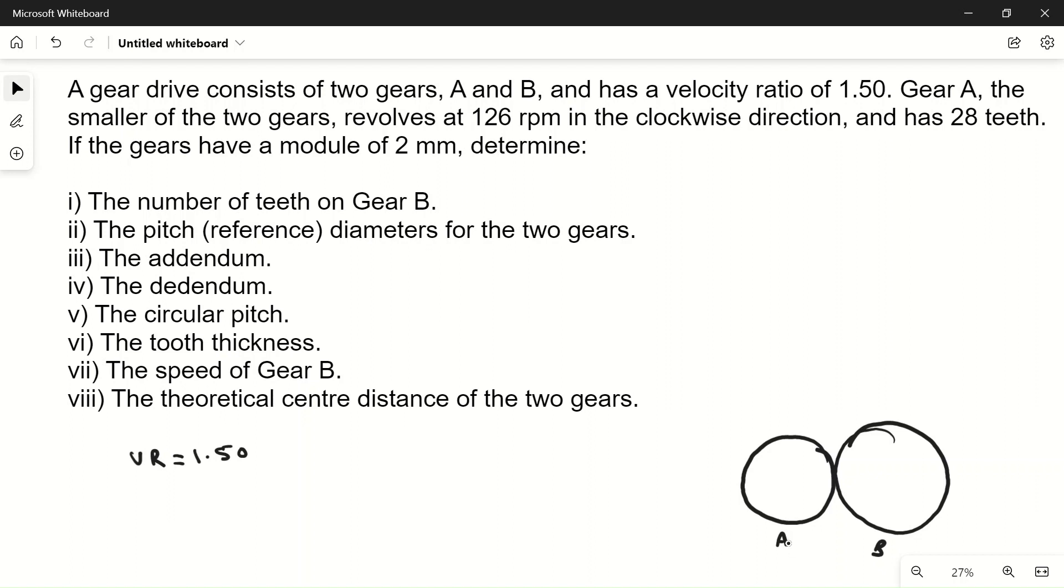Here A, the smaller of the two gears, revolves at 126 rpm, the speed of gear A is 126 rpm in the clockwise direction, and has 28 teeth. TA is 28, number of teeth on gear A is 28. If gears have a module of 2 mm, so m is 2 mm which will be same for both gears because they are meshing.